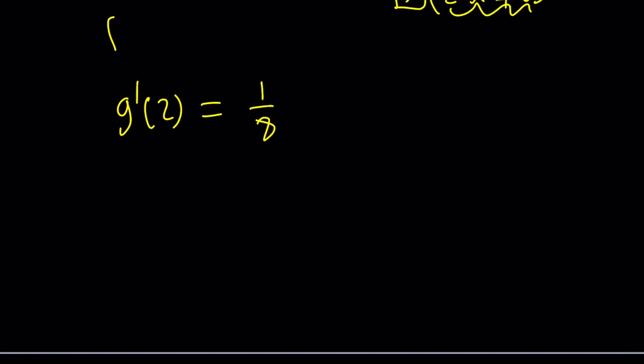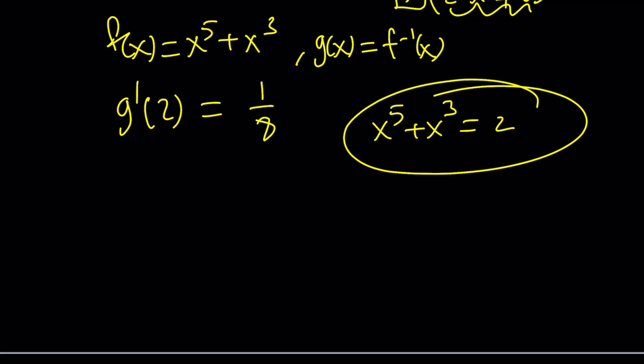Now, this is interesting because we did not know the inverse of this function, but we were able to evaluate the derivative at a point. If that point is nice enough, well, it's always going to be nice, but the issue is when you set this equal to 2, finding the x value is not always easy because notice you're dealing with a quintic equation, which doesn't have a solution in the general case. But anyways, the answer is 1/8.